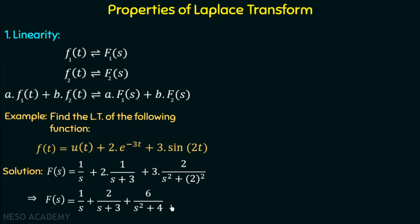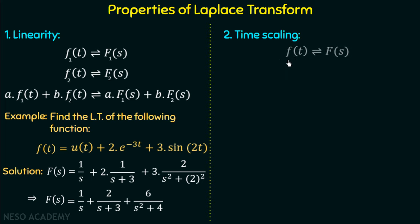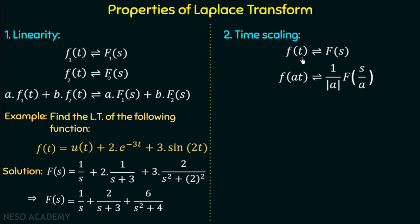Now we will move on to the next property: the time scaling property. Suppose f(t) is a time domain function with Laplace transform F(s). If we multiply a constant to the argument of this function — that is, we scale this function — then the Laplace transform of f(at) is given as (1/|a|)·F(s/a), where F(s) is the Laplace transform of f(t). We need to substitute s/a wherever s appears in the Laplace domain.